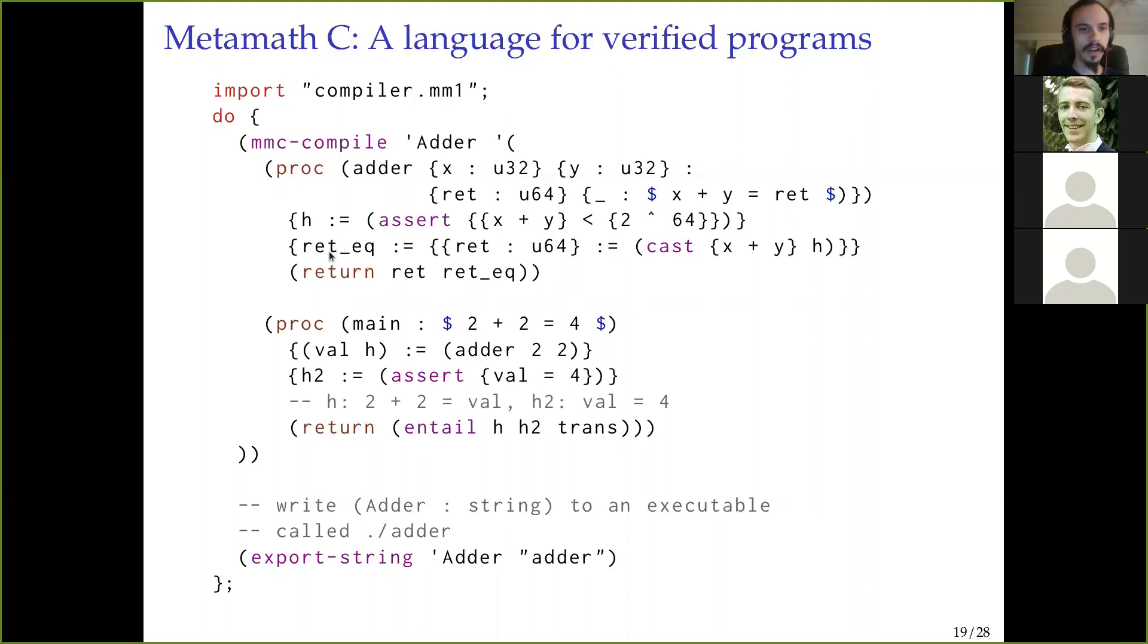And then we're calling here the MMC compile. And then inside this quoted Lisp literal, we have this different language, this C language. So here, this is the MetaMath C language. And we're going to define a procedure called adder and another procedure called main. And adder takes x and y, returns ret, and a proof that x plus y equals ret.